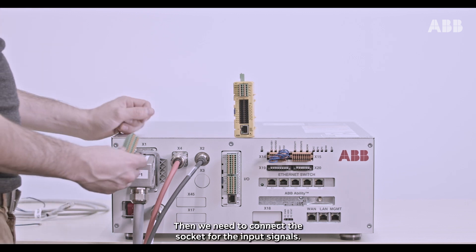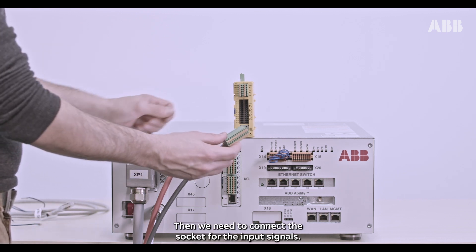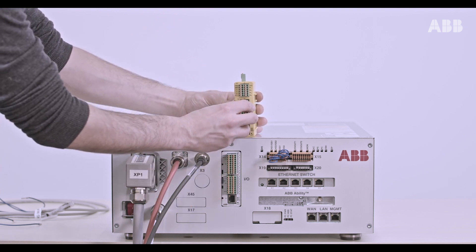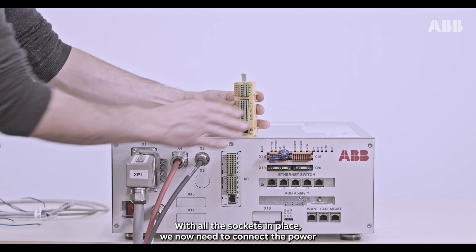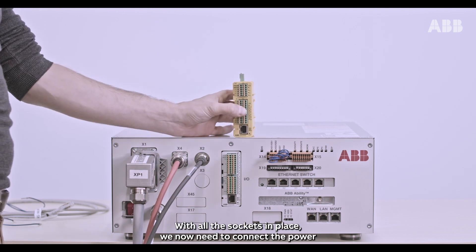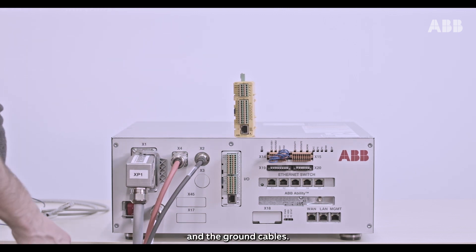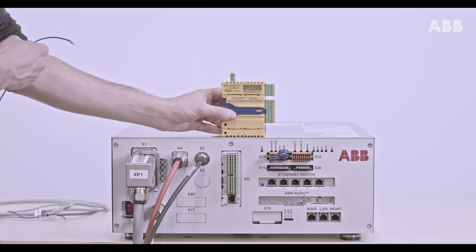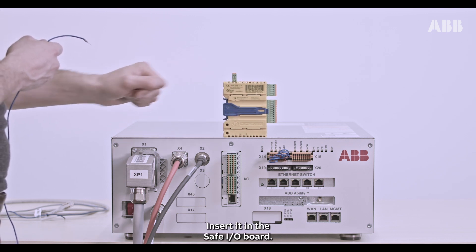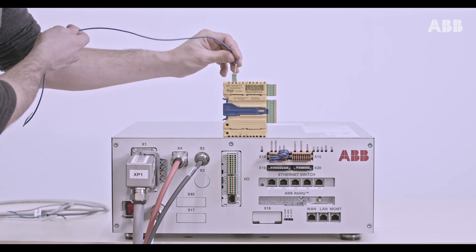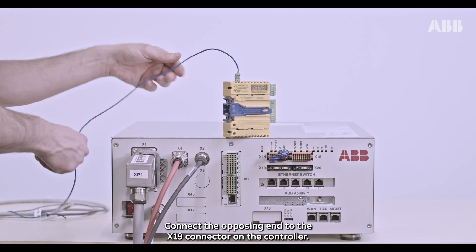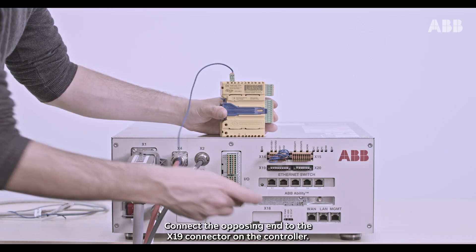Then, we need to connect the socket for the input signals. With all the sockets in place, we now need to connect the power and the ground cables. Let's start with the ground cable. Insert it in the safe I.O. board. Connect the opposing end to the X19 connector on the controller.